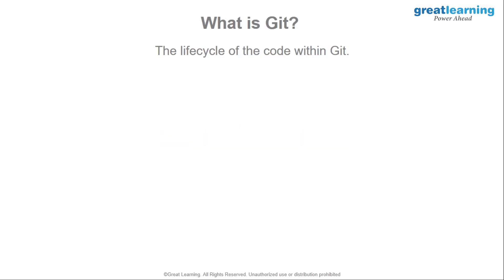Let's understand how the code flows within the Git system itself. From what we have learned so far, you can probably deduce that you will write the code on your system and that code will be pushed onto the distributed repository or the cloud — which is exactly what happens in Git — but there are a few steps that we didn't mention. Now let's start talking about those steps.